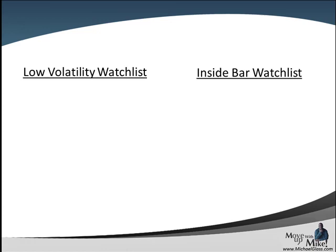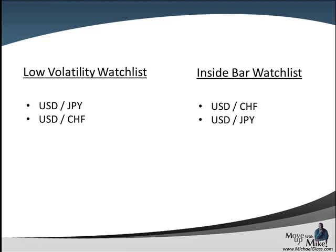Moving on to our low volatility watch list: since we're talking about indecision and parity, we do have some candidates — the Dollar/Yen and Dollar/Franc. The inside bar candidates we talked about are the Dollar/Franc, Dollar/Yen, and Pound/Yen. For the low volatility watch list, take the one-hour Bollinger Bands, mark the high and low, and watch for a break. For the inside bar watch list, take the high and low of Friday's action and watch for a break.